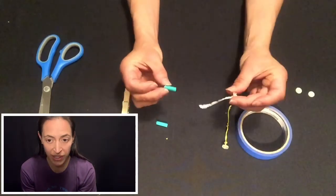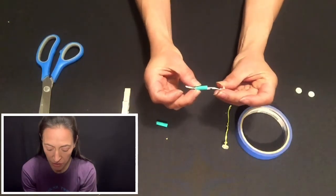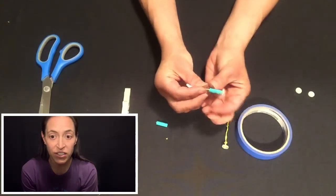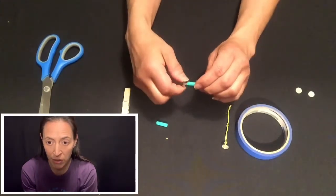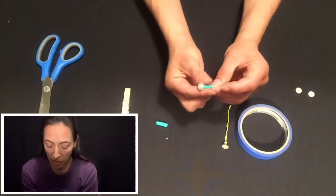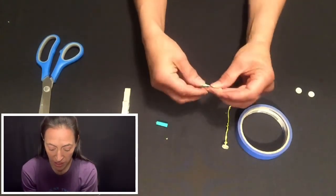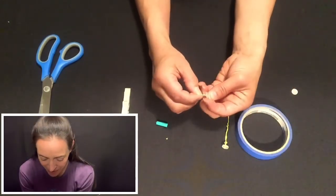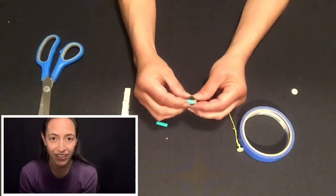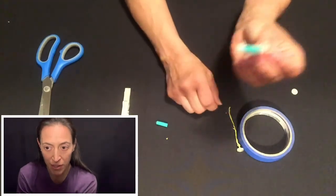Alright, this will be the axle, so I'm going to feed through my twist tie like this. I don't want it to be too tight or else it will not allow my wheels to roll, so I want to give it a little bit of room. And on the other side I put my other button.